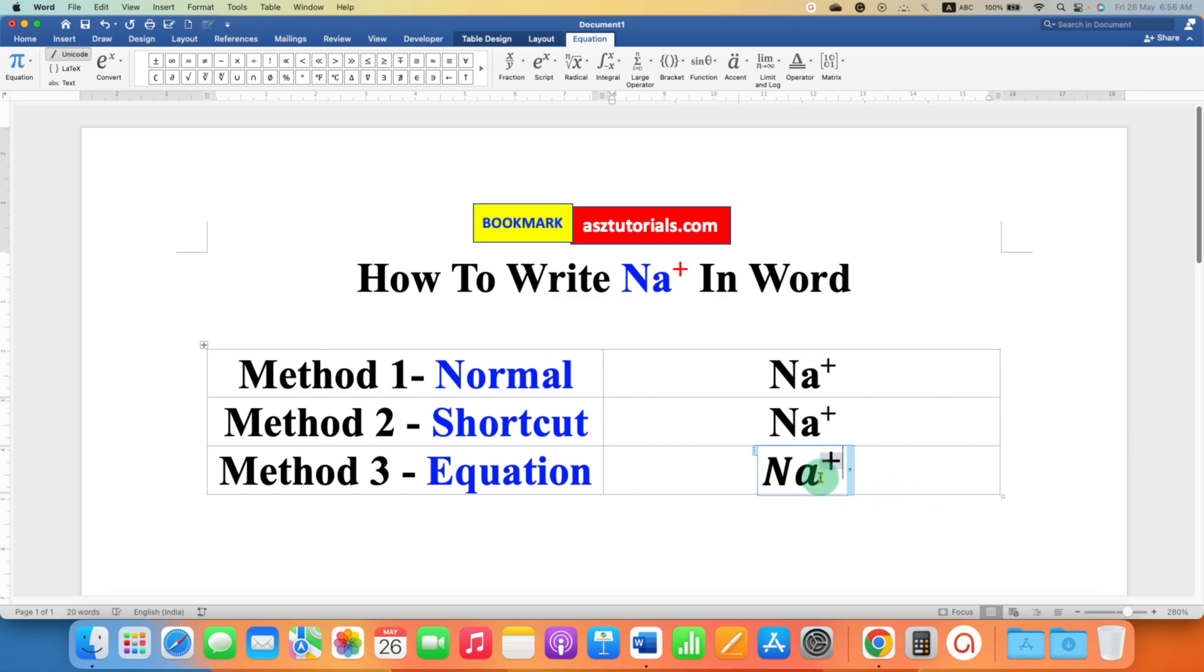Notice that Na is in italics. So, you just have to select the Na plus and click on ABC text.